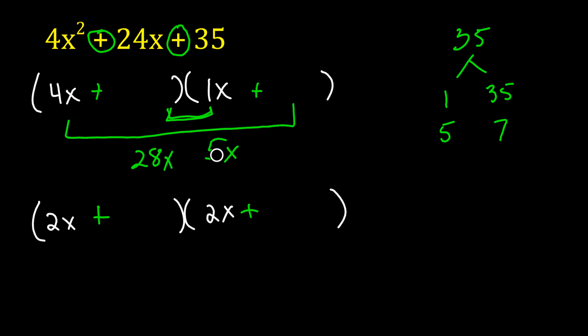Let's put the 7 there and the 5 there. 7 first, 5 second. 4x times 5 is 20x, and 7 times 1 is 7x. We're close, but 27 is not 24. So we've exhausted all the possibilities for that first 4x and x. So it's not that. So it's got to be 2x and 2x.